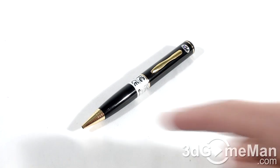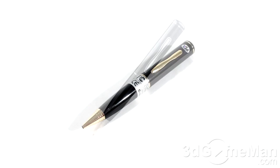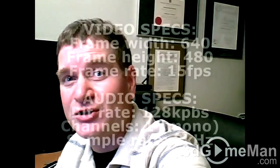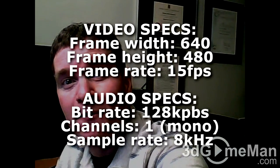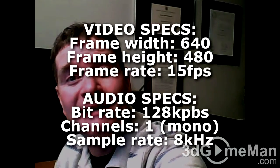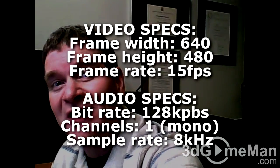And by the way, if you don't like gold, well they have a silver option as well. Let's see how this pen cam performs. I'll test it in bright light and in low light. By the way, the video resolution is 640 by 480 at 15 frames per second, and the audio bit rate is 128 kbps mono, and the sampling rate is 8 kilohertz.